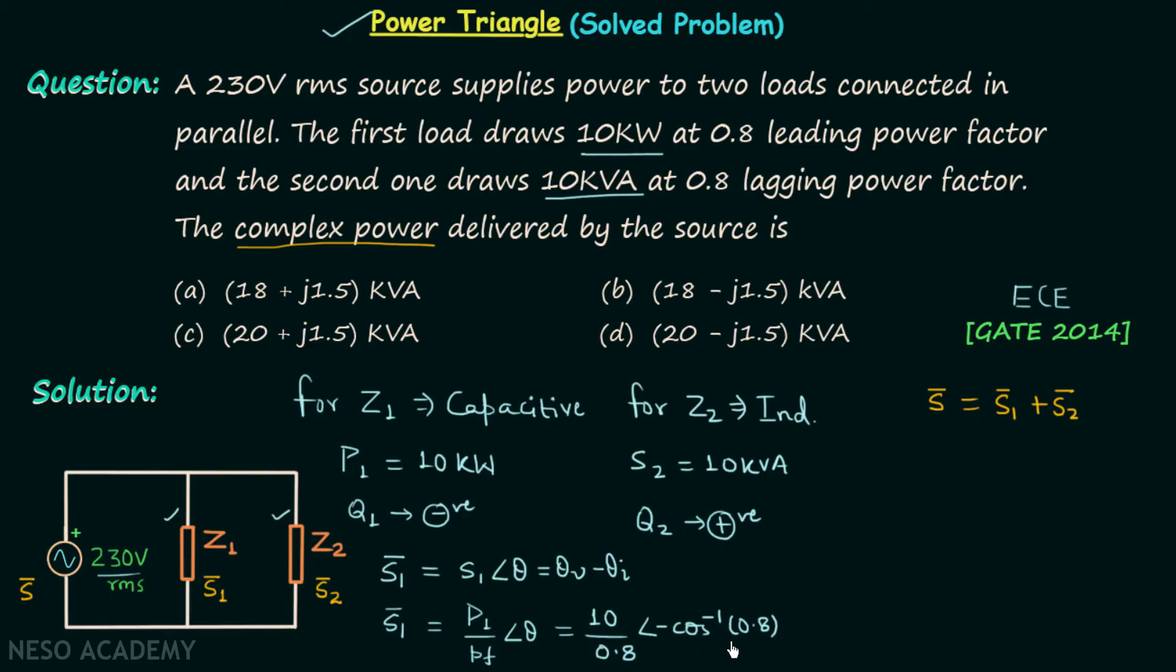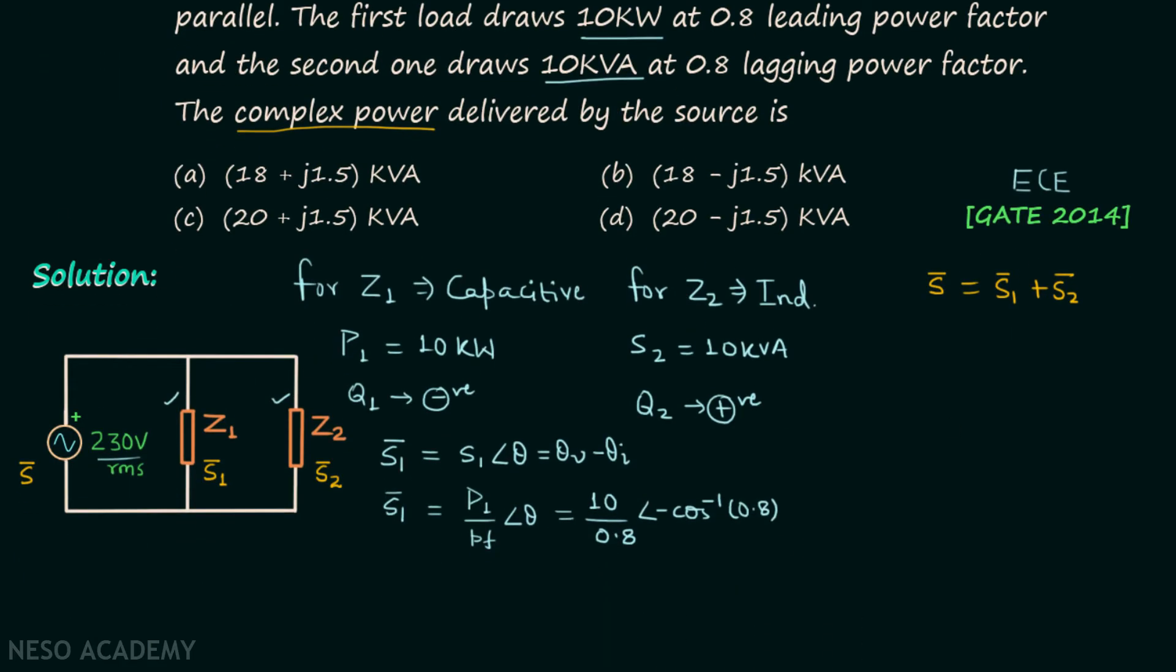Let us understand how we are writing this angle. We know power factor equals cos theta. From here we can say theta equals cos inverse of the power factor—power factor is 0.8 cos inverse. The negative sign we have because theta is going to be negative when the reactive power is negative. You can see this from the power triangle. When you solve it you will have the complex power S1 equal to 12.5 angle negative 36.86 degrees.